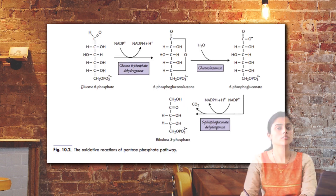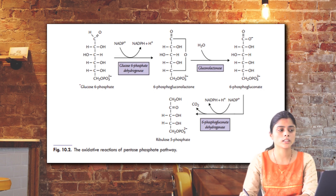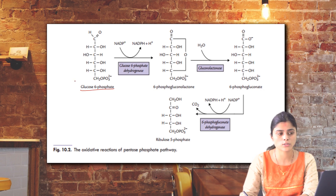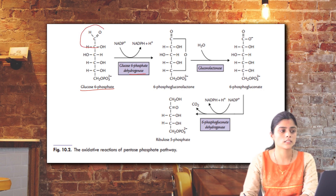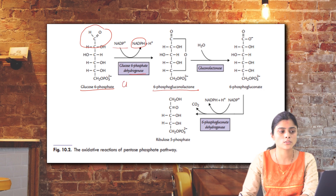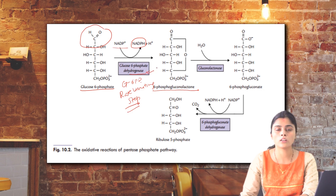The pentose phosphate pathway has two parts: oxidative reactions and isomerization reactions, ultimately forming NADPH and other forms of hexose monophosphate or monosaccharides. The substrate here is glucose 6-phosphate, converted from glucose by hexokinase or glucokinase, which undergoes a dehydrogenation reaction forming NADPH and 6-phosphogluconolactone. Glucose 6-phosphate dehydrogenase (G6PD) is the rate-limiting step in the HMP shunt pathway.